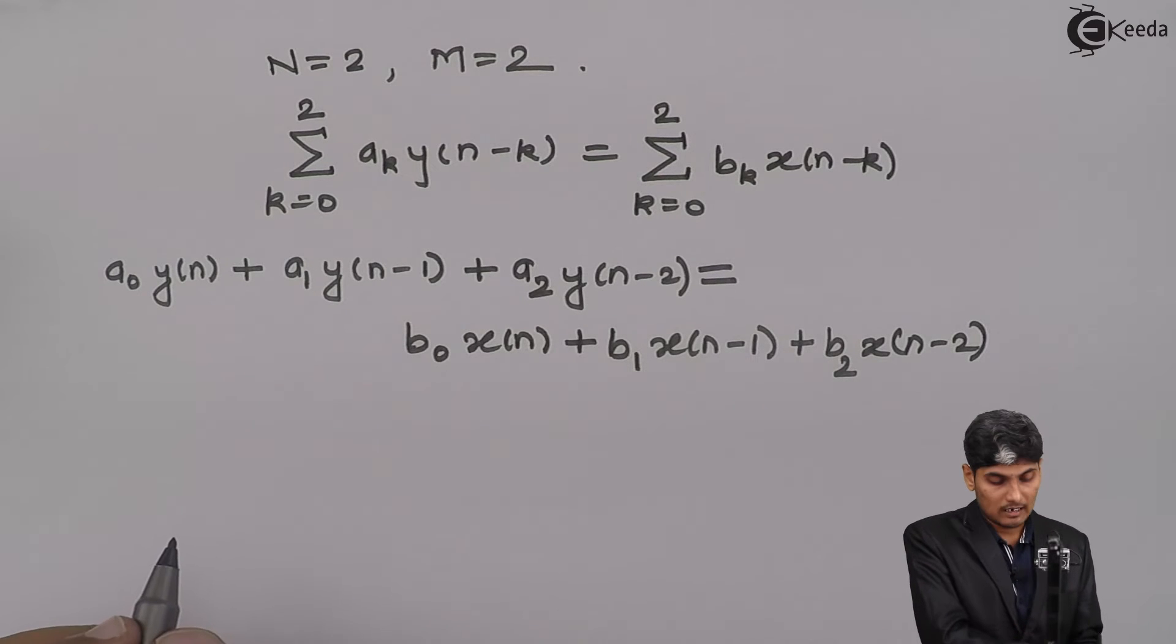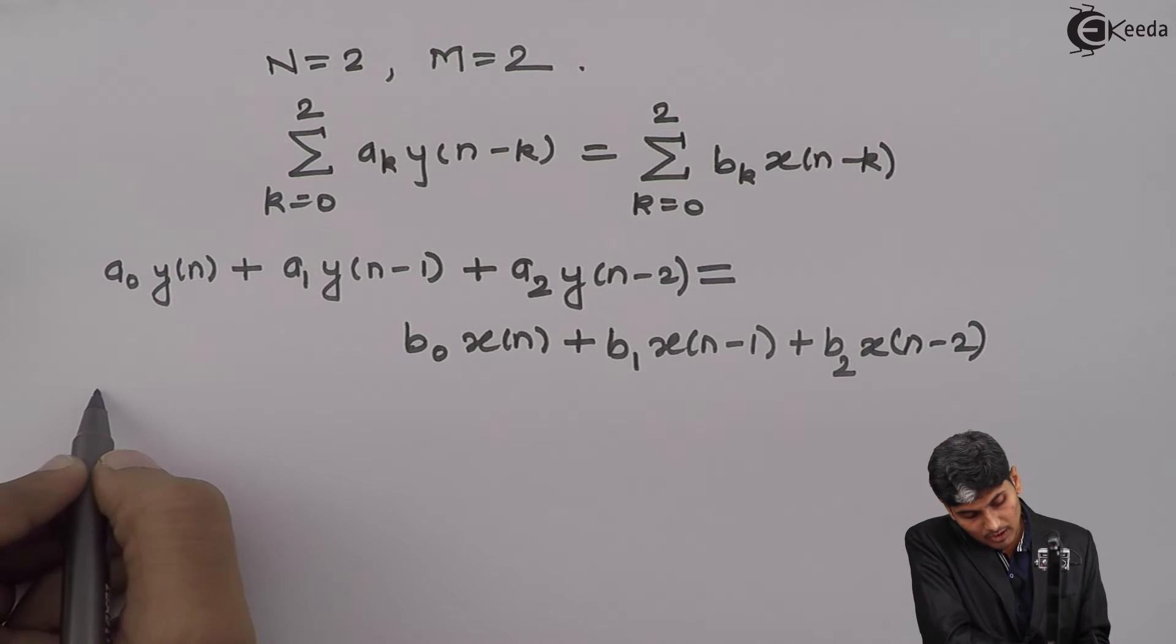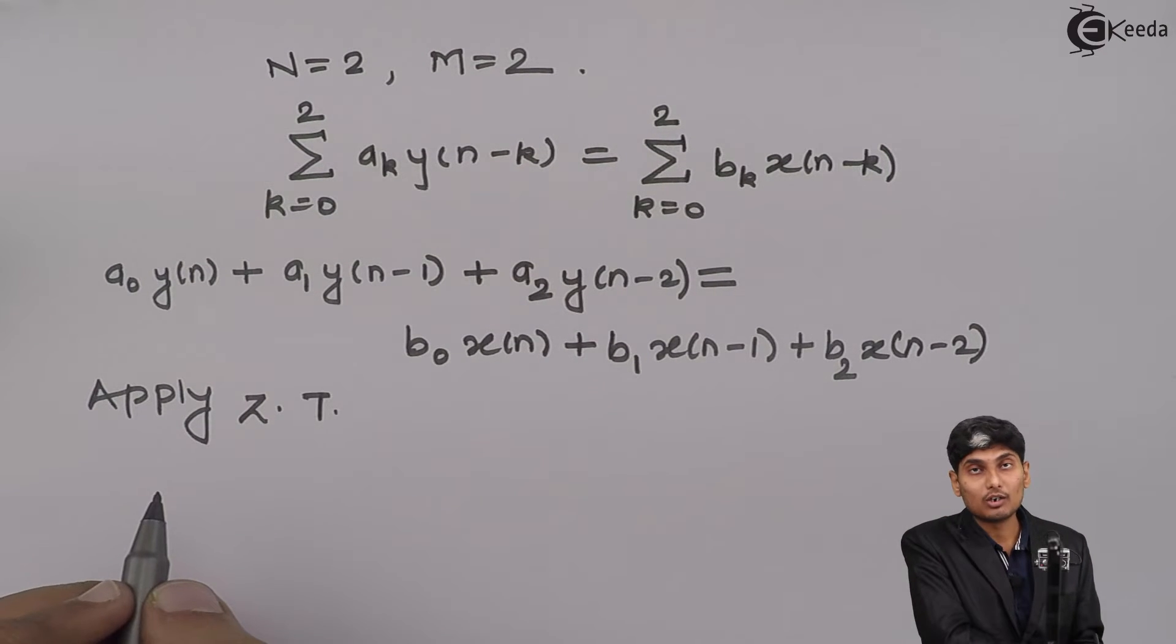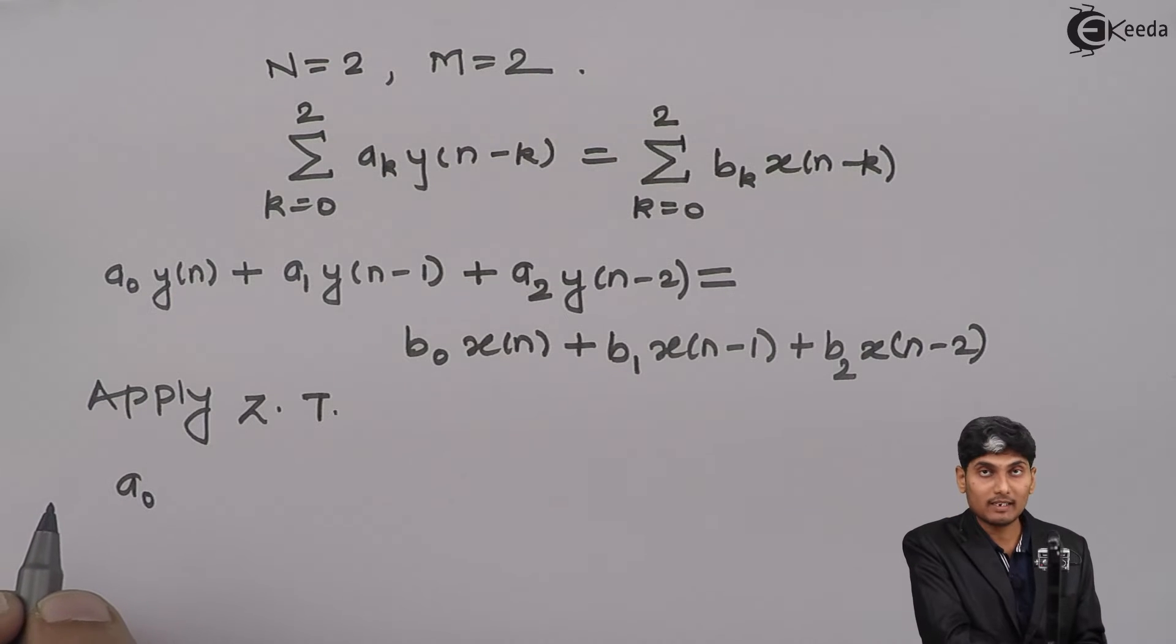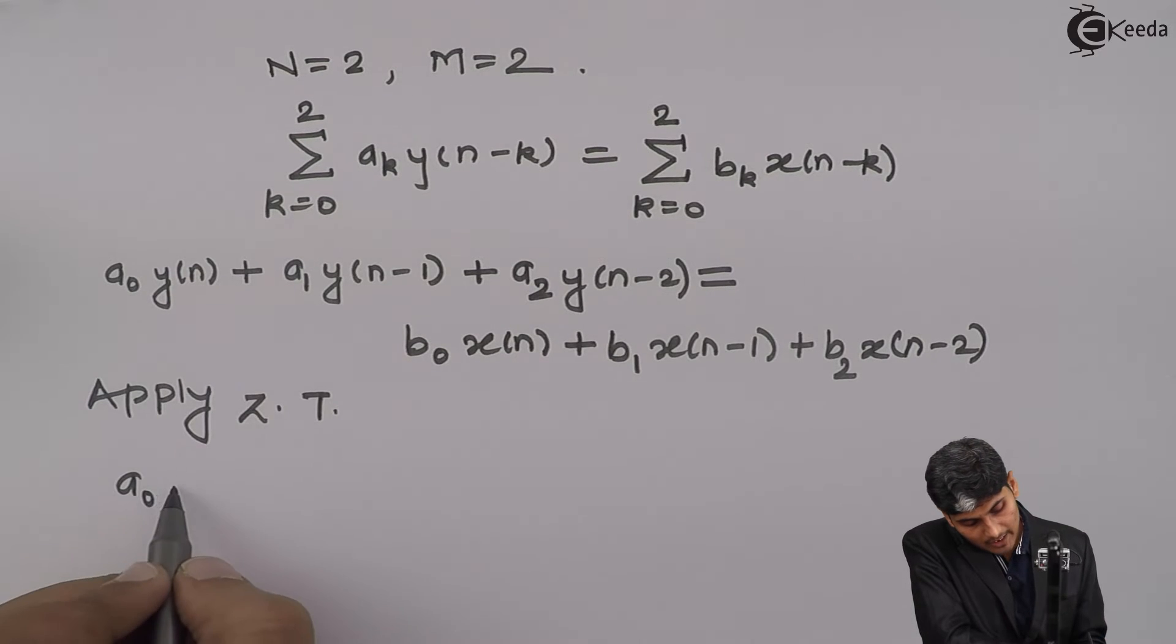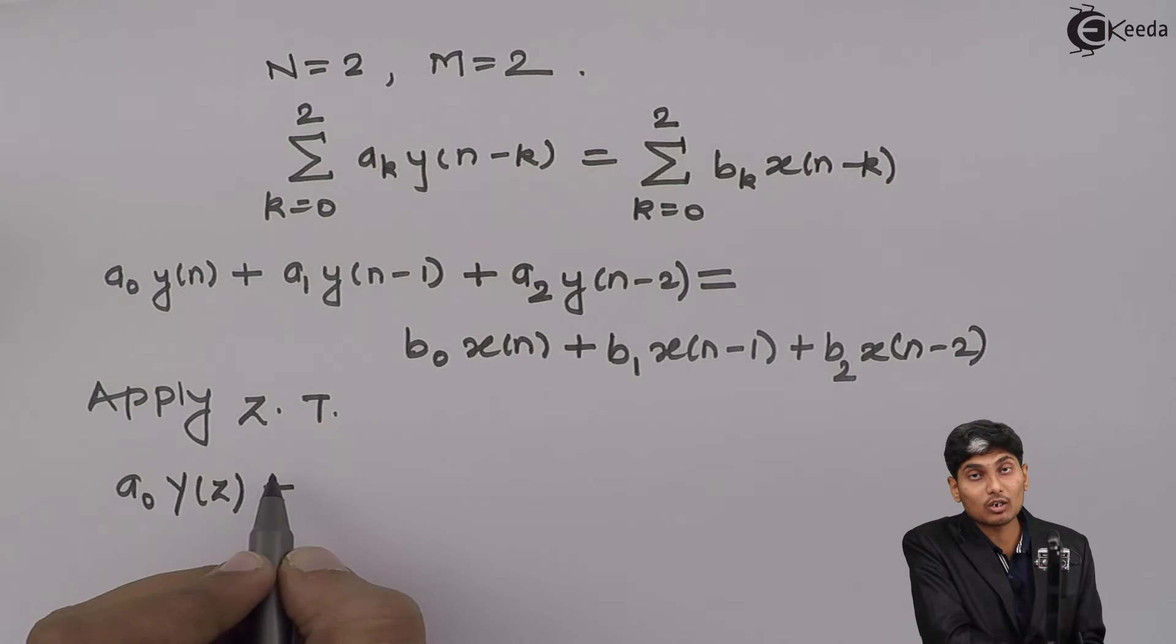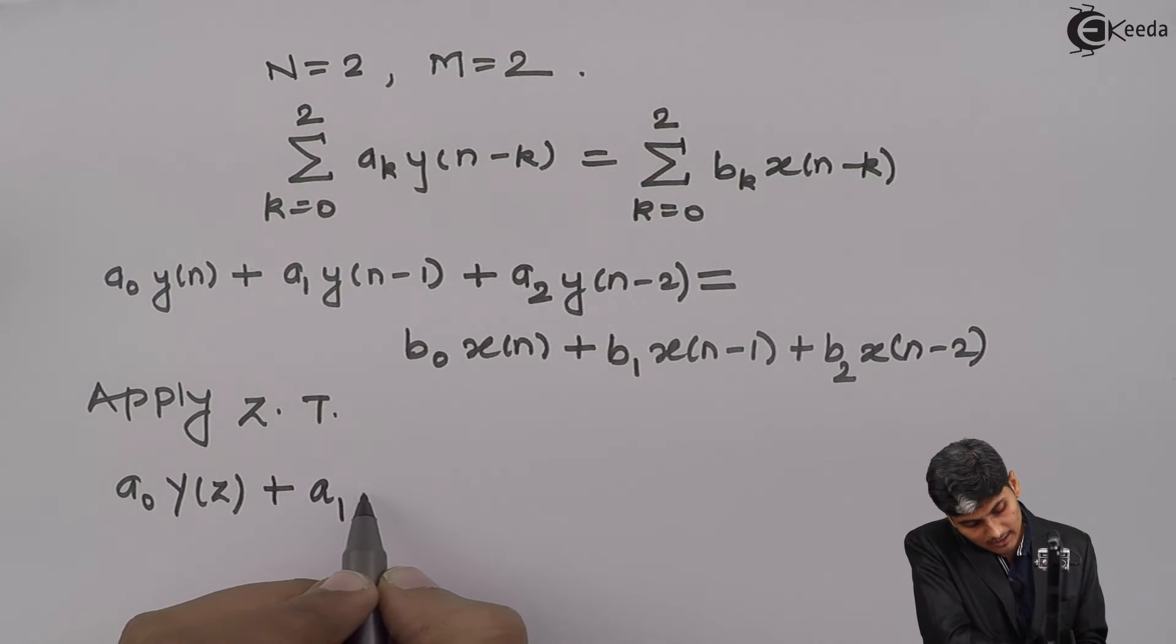Now, let us apply to this equation the z transform. We apply z transform onto this equation. We get a_0 by scaling property, y(n) will be converted to Y(z).